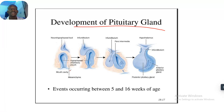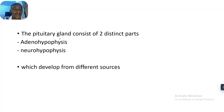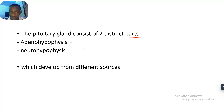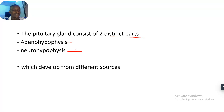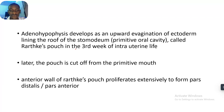The pituitary gland has the anterior side and the posterior side. It consists of two distinct parts: the adenohypophysis and the neurohypophysis. The adenohypophysis is the anterior compartment, while the neurohypophysis is the posterior compartment, and they develop from different sources.